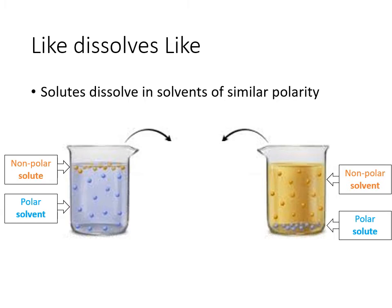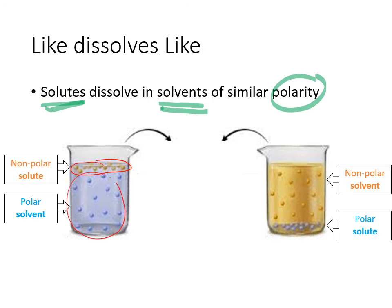'Like dissolves like' is the phrase we use to describe how things dissolve. Solutes dissolve in solvents — the solute is the part you're putting in (the smaller amount), and the solvent is doing the dissolving. Solutes dissolve in solvents of similar polarity: polar solutes dissolve in polar solvents, and nonpolar solutes dissolve in nonpolar solvents. For example, a nonpolar solute in a polar solvent will not mix because they are not alike.